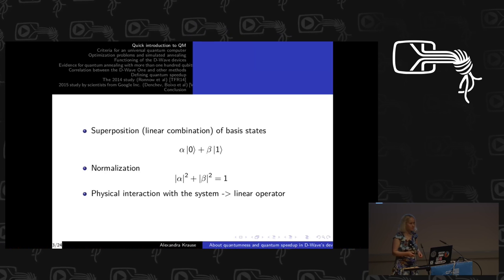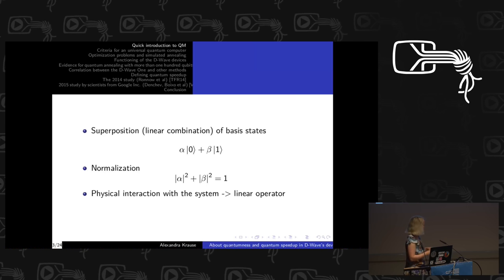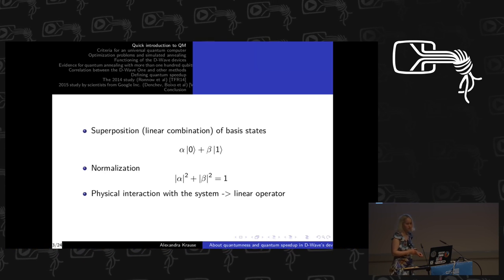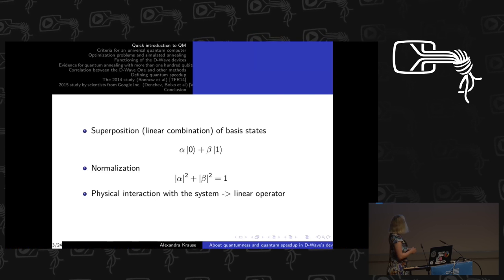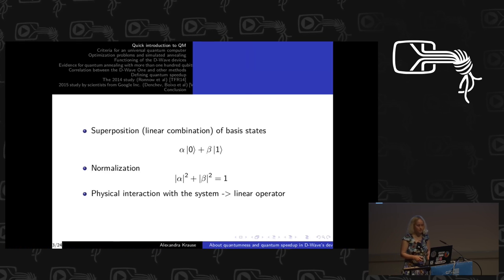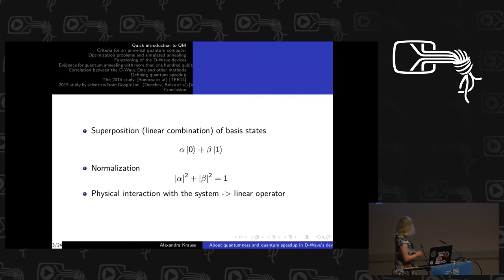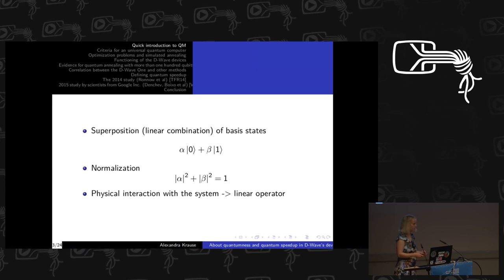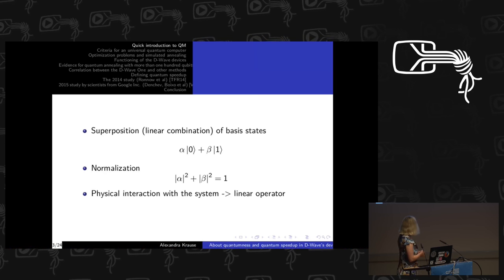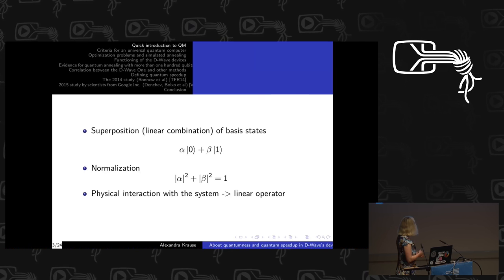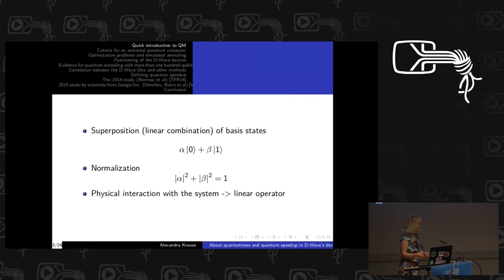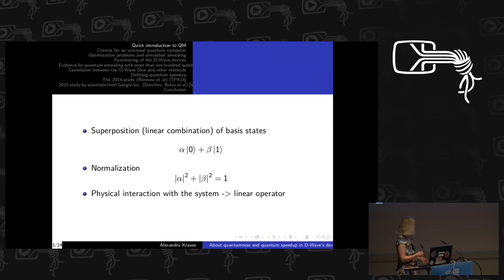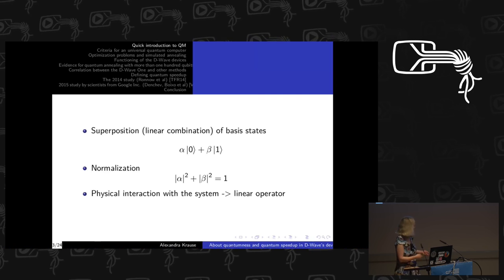When you measure the system, you will project the state onto one of the basis states. The probability of obtaining one of the basis states is given by the probability amplitude — here called alpha and beta — which are complex numbers, but their probability is given by the square. You have to implement normalization on the vector space, meaning all probability amplitude squares will add up to one, because otherwise you would have more than a likelihood of one for all possible outcomes, which would not make sense physically.